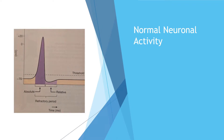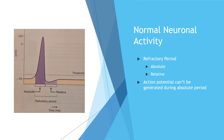The refractory period is divided into absolute and relative periods. During the absolute refractory period, no further action potential can be generated; it typically lasts from the beginning of depolarization until near the end of repolarization. During the relative refractory period, stimuli can cause an action potential but only if they are significantly large enough to exceed threshold. The graph on the left relates the refractory period to the action potential waveform.